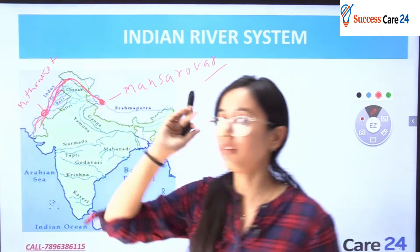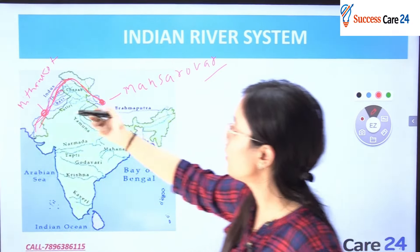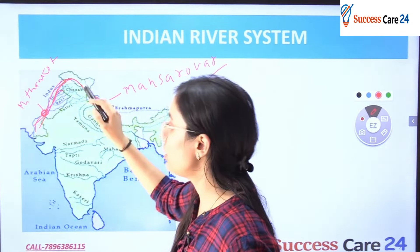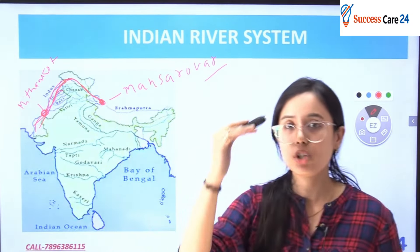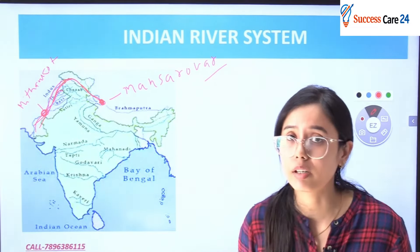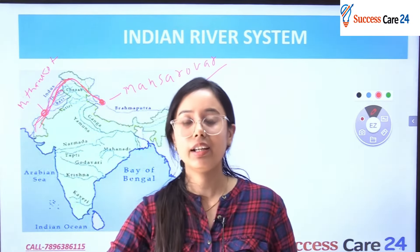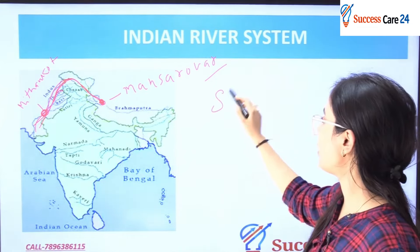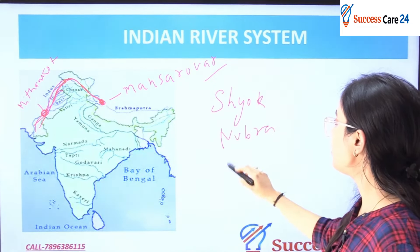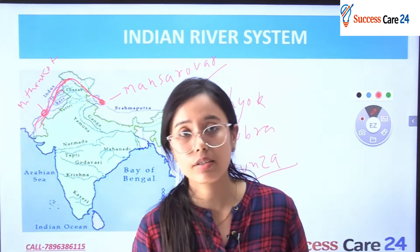The five major tributaries of the Indus are: Jhelam, Chenab, Ravi, Beas, and Satlaj. They all meet the Indus at Mithankot. There are also other tributaries such as Shyok, Nubra, and Khunza, which are also part of the Indus river system.